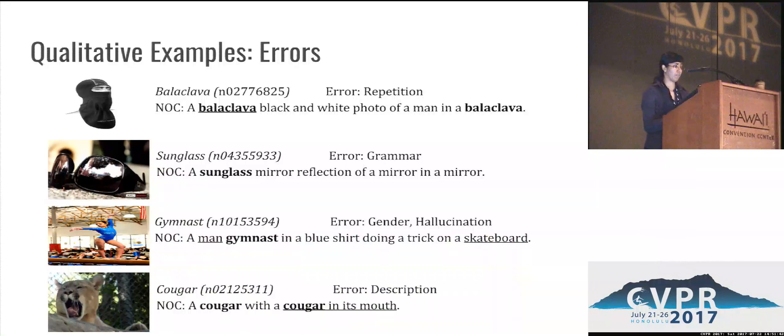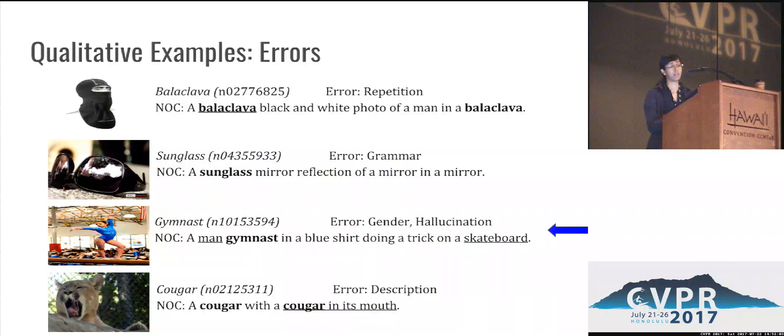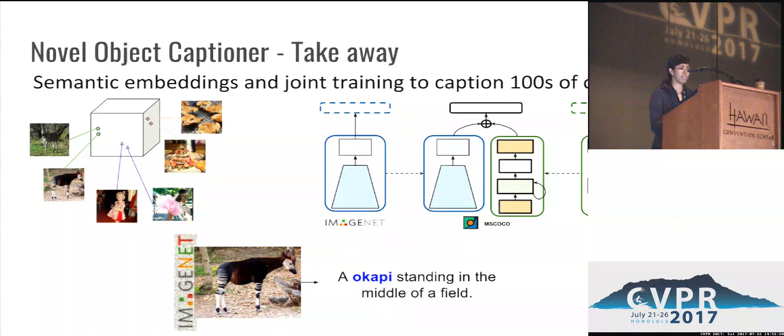Our model also makes several categories of errors. One common error is repetition — it tends to repeat words or object names in the sentence multiple times, as in the balaclava example. There is also an example of a gymnast where it says: a man gymnast in a blue shirt doing a trick on a skateboard — getting the gender wrong. The model also tends to hallucinate objects not present in the images, possibly because those objects are commonly seen in image caption datasets.